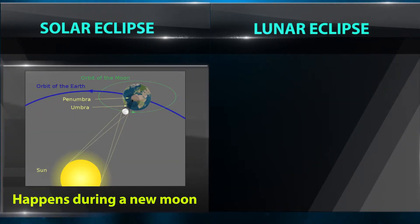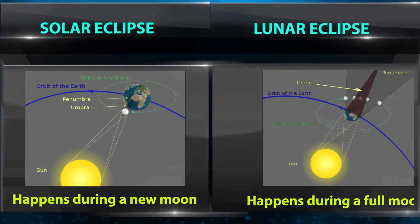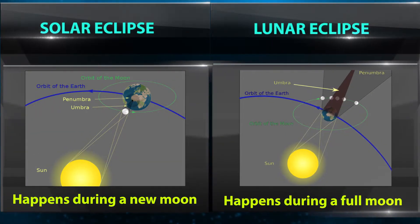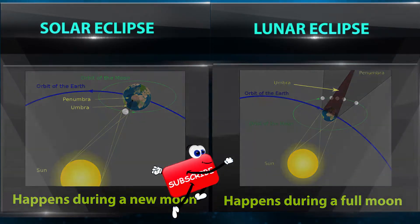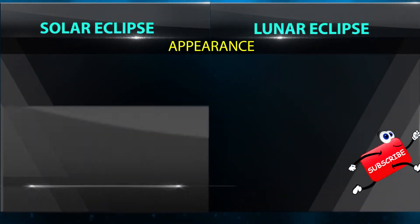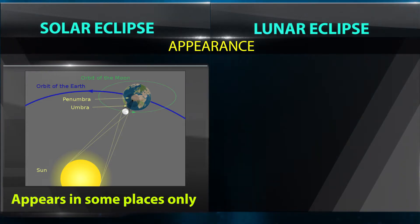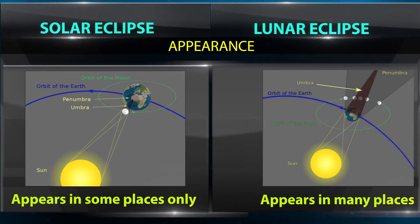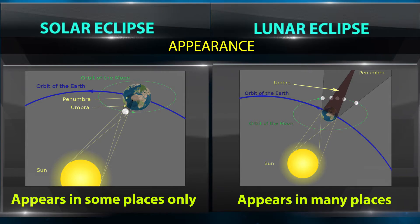Solar Eclipse happens during a new moon. Lunar Eclipse happens during a full moon. Solar Eclipse appears in some places only. Lunar Eclipse appears in many places.